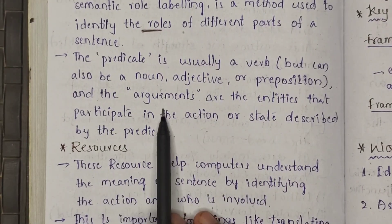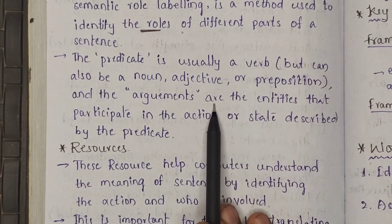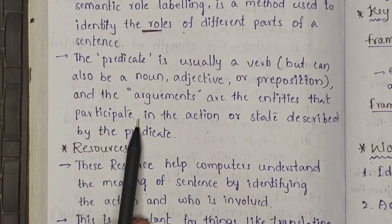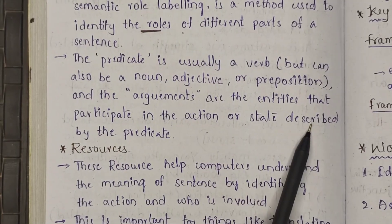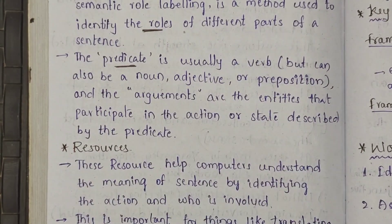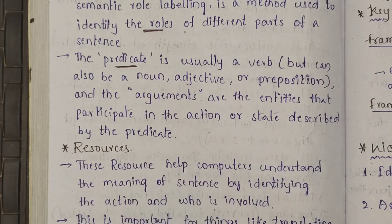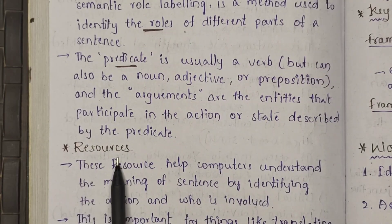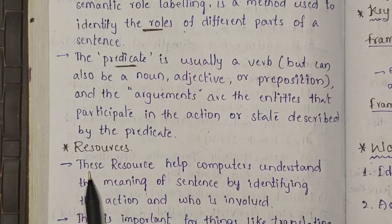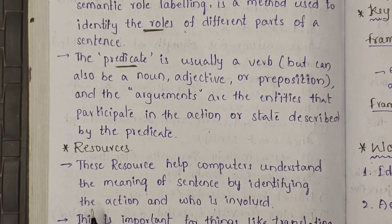And we have an argument. An argument is nothing but, for example, like objective or subjective — it is an argument. These are the entities that participate in the action or state described by the predicate. For example, subject and object are arguments. Resources help the computer understand the meaning of sentences by identifying the action and who is involved.